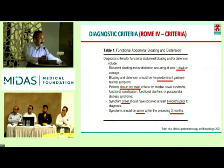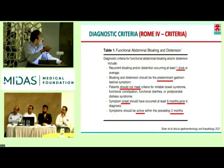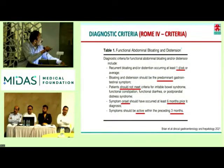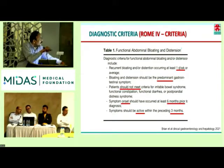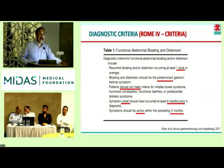In all functional GI disorders, there is a Rome criteria. Functional bloating and distension should be the only predominant symptom, without other things like IBS, constipation, diarrhea, or post-prandial distress syndrome. It should be at least one day a week as the predominant symptom, with onset six months prior and active for the last three months. In clinical practice, you have a mixed bag — people will have bowel symptoms, and nobody will come predominantly with only bloating and distension. I recently got a young girl who had only predominant bloating and sensation without any altered bowels, and she responded well to rifaximin.